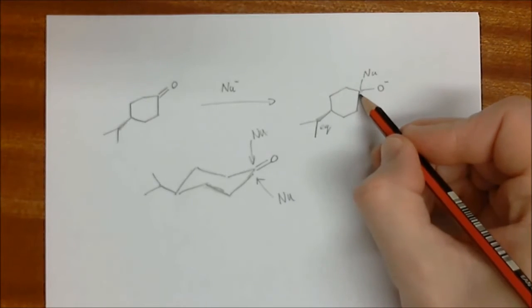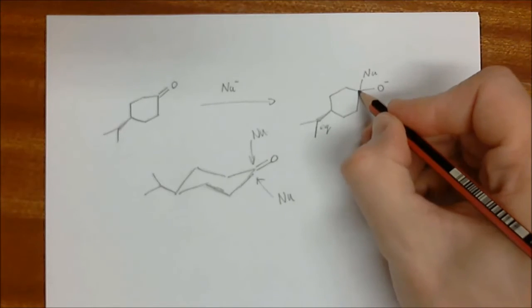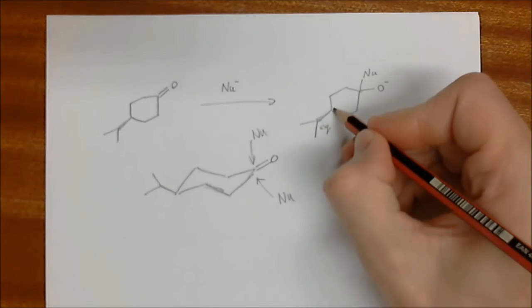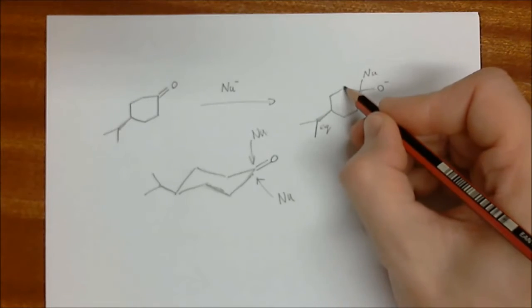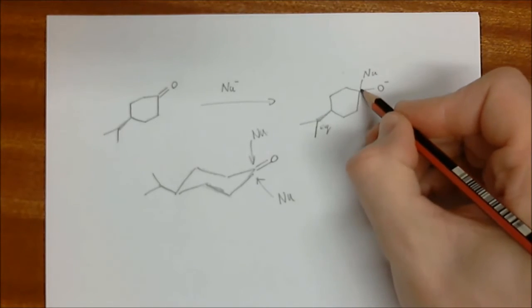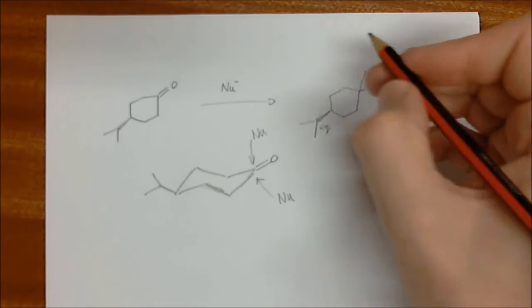If we move around the ring over here, we'll find out at this position over here, equatorial up, equatorial down, equatorial up, equatorial down. And that means if the nucleophile is big, right?